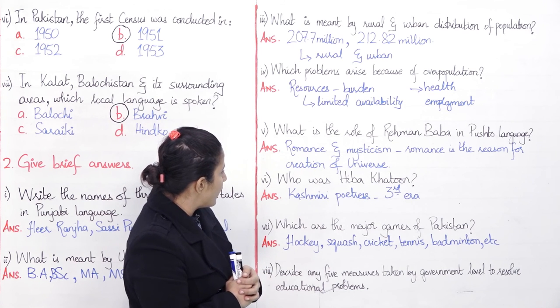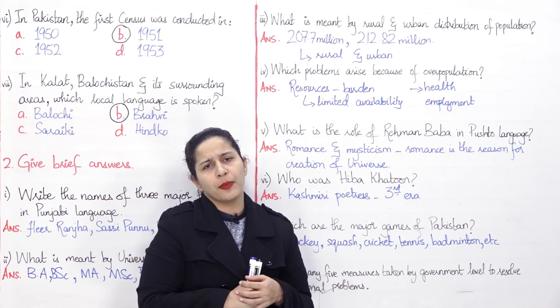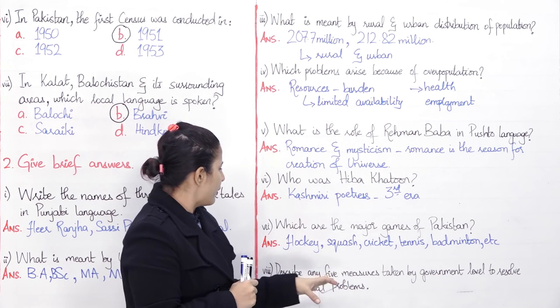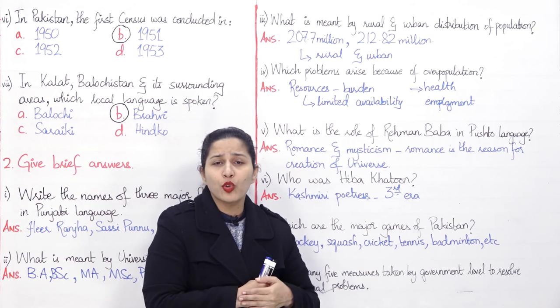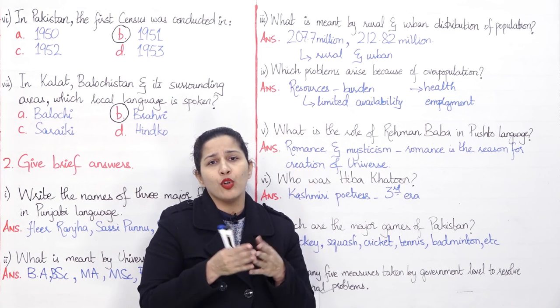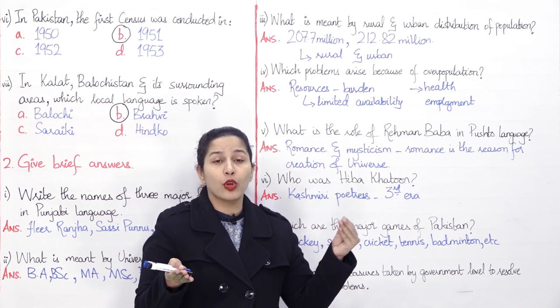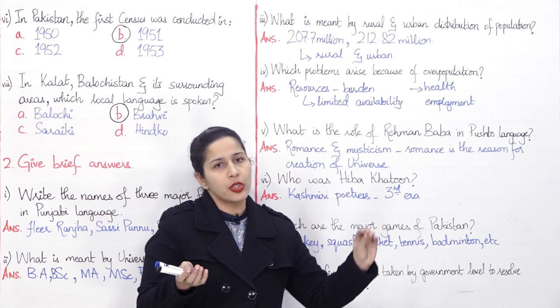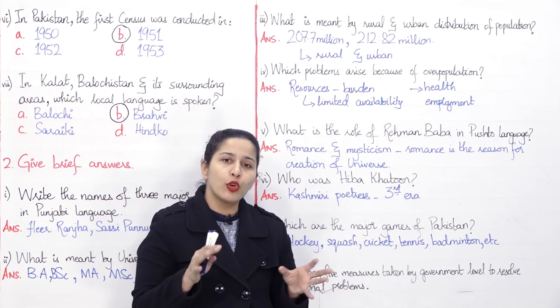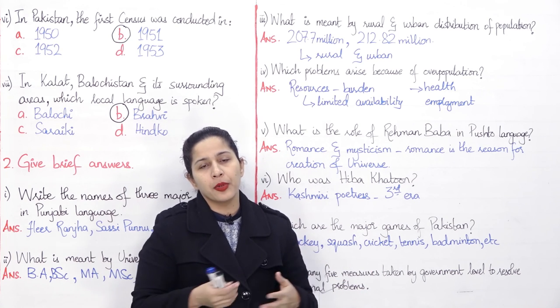Seventh question: Which are the major games of Pakistan? I have listed few of them: hockey, squash, cricket, tennis, badminton, etc. These are outdoor games. You can divide them into indoor and outdoor games. You can talk about rural games like Gilli Danda, Kabaddi, marbles, and then indoor games like Ludo, chess, Carrom. You can give any two to four examples.